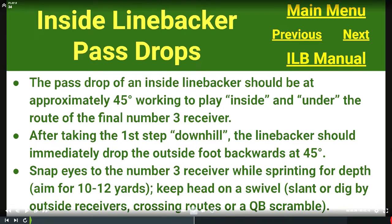The biggest pain in seven-on-sevens is that inside linebackers get used to just dropping without taking that first step downhill. I still want that first step downhill — checking what my guard does if I'm reading guard, checking what the backfield does if I'm reading backfield. Once the linebacker reads pass, he wants to drop his outside foot backwards at a 45, open up his hips, snap his eyes to the number three receiver, and sprint for depth. We're aiming for 10 to 12 yards because in a game it turns into 8 to 10, keeping your head on a swivel.